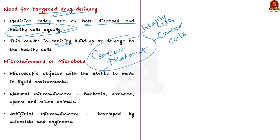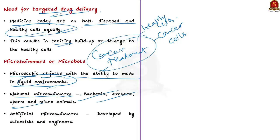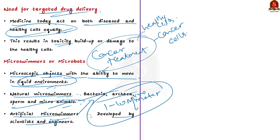Microswimmers are nothing but microscopic objects with the ability to move in a liquid environment. Natural microswimmers are found everywhere in the natural world as biological microorganisms such as bacteria, archaea, and micro animals. Since the turn of the 21st century, scientists and engineers have begun to develop artificial analogues to natural microswimmers. Artificial microswimmers are comparable in size to bacteria and are typically 1 to 10 micrometers. These artificial microswimmers can also propel themselves through liquids, but developing an artificial microswimmer is not an easy task.